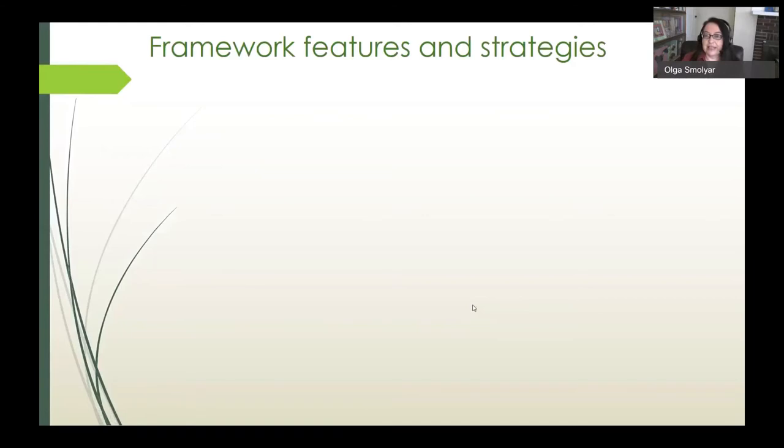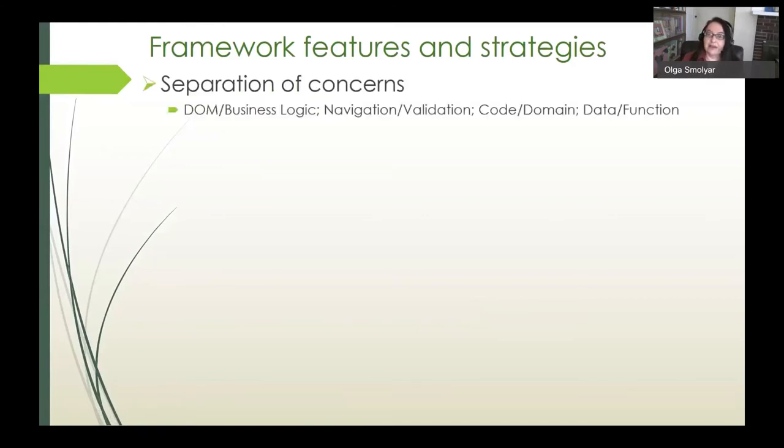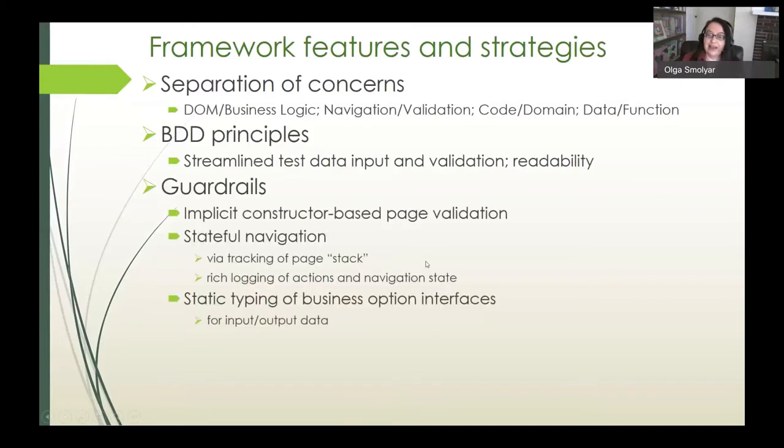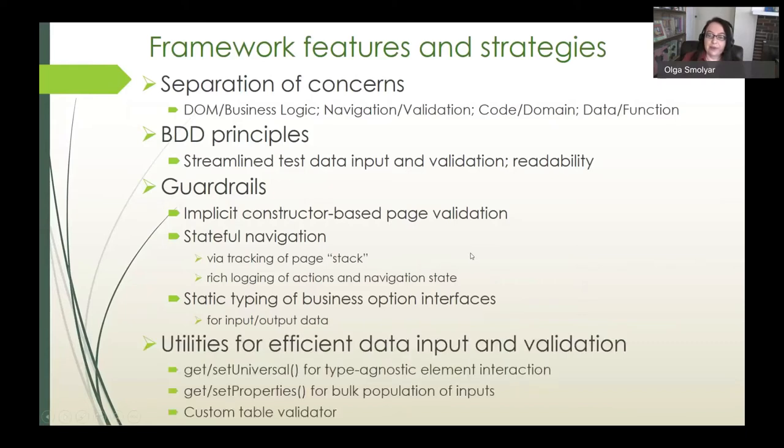Some of the framework features and strategies we'd like to share include separation of concerns across a range of levels, the use of BDD principles which allow, among other things, streamlined test data for input and validation, and a number of guardrails that we've put in place to address the reliability aspects mentioned earlier, including implicit constructor-based page validation, stateful navigation, and static typing of various entities. Finally, we'll look at some utilities that we've developed for efficient data input and validation, including get and set universal for type agnostic element interaction, get and set properties for bulk population of inputs, and a custom table validator.